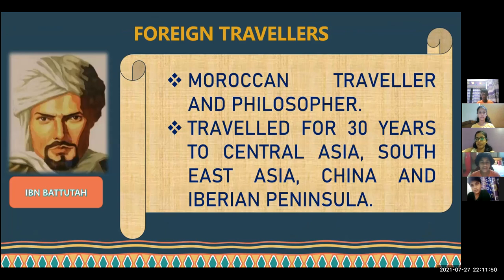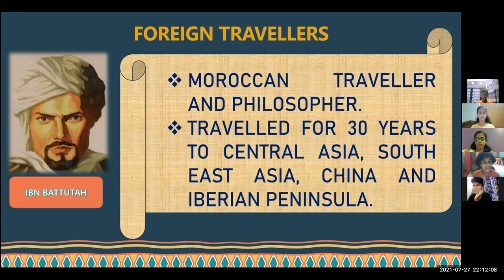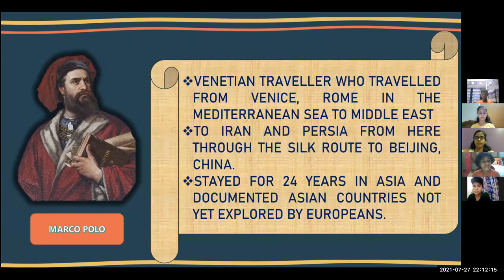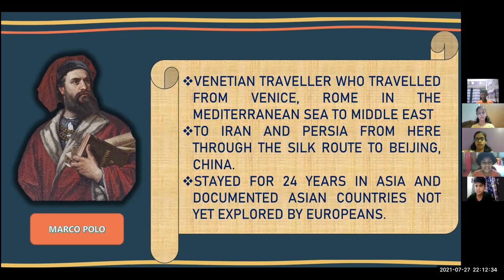The first foreign traveler we are going to talk about is Ibn Battuta. He was a Moroccan traveler and philosopher who traveled for 30 years to Central Asia, Southeast Asia, China and the Iberian Peninsula. The second traveler is Marco Polo, a Venetian traveler who traveled from Venice through Rome and the Mediterranean Sea to the Middle East, then through Iran and Persia via the Silk Route to Beijing, China. He stayed for 24 years in Asia and documented Asian countries not yet explored by Europeans.